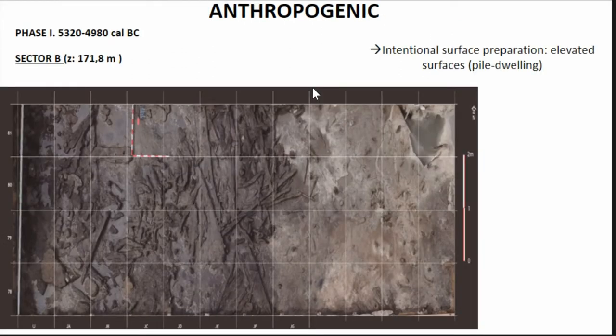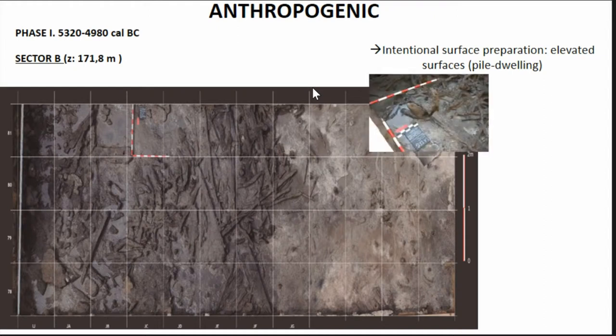Apart from the geogenic and unintentional activities that leave marks on the stratigraphy, there are also the intentional anthropogenic formation processes, which in the case of La Draga include the preparation of elevated surfaces, the so-called pile dwelling structures made out of timber logs.